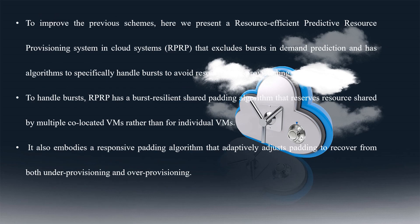To improve the previous schemes, we present a resource efficient predictive resource provisioning system. This method excludes burst in demand prediction and has specific algorithms to handle the burst to avoid resource provisioning issues. To handle burst, RPRP — that is Resource Provisioning and Resource Predictive system — uses a burst-resilient shared padding algorithm that reserves resources shared by multiple co-located VMs rather than for individual VMs.